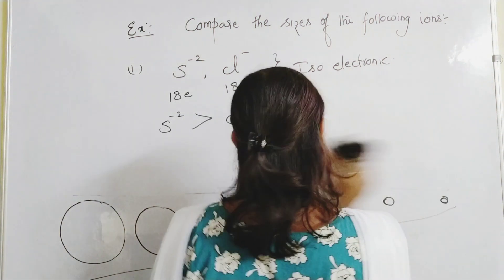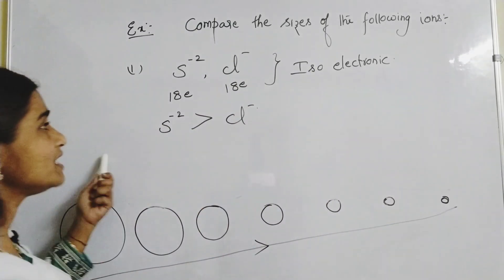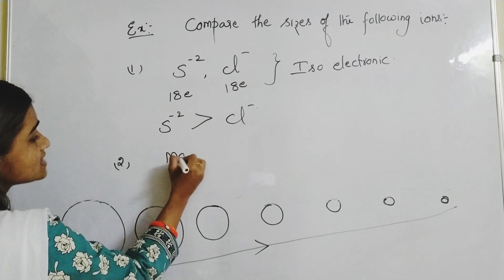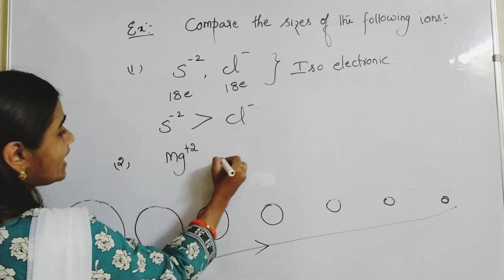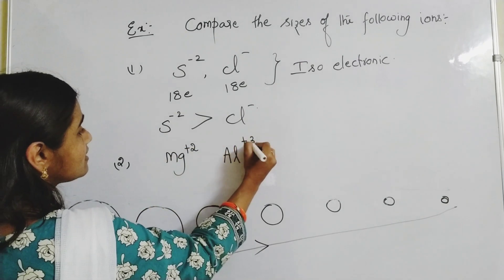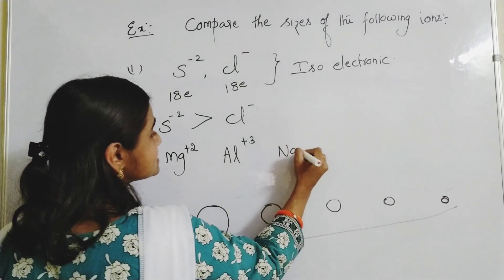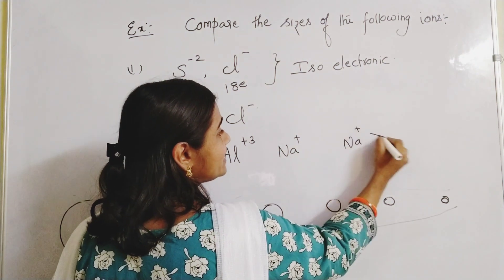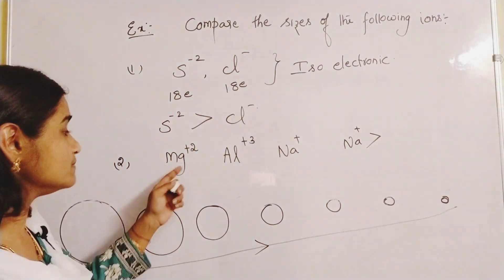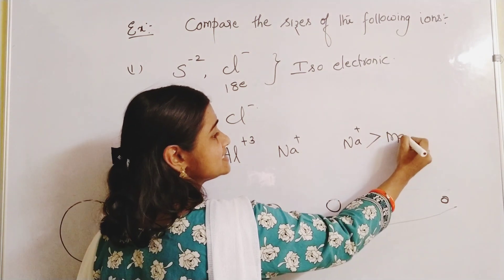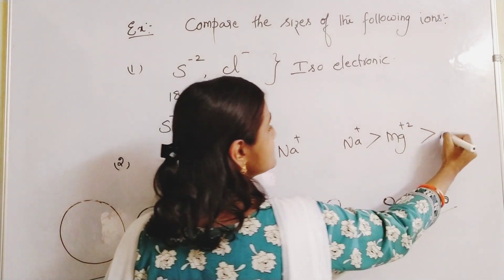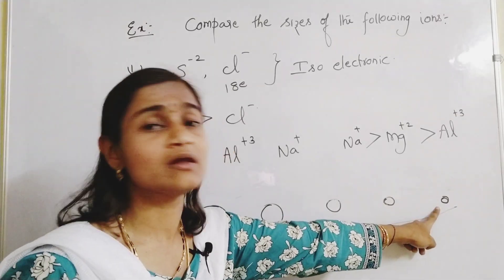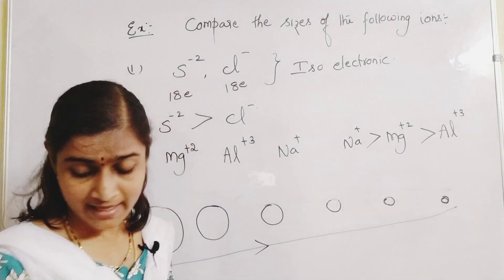For cation comparison: compare Na⁺, Mg²⁺, and Al³⁺. Na⁺ is a little bigger, then comes Mg²⁺, then Al³⁺ is the smallest — as charge increases in an isoelectronic cation series, size decreases.